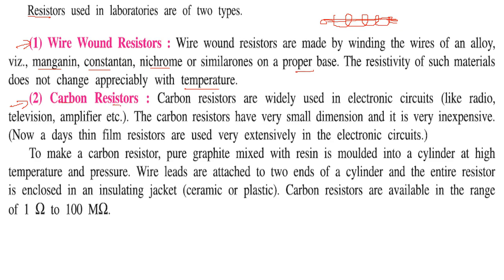Carbon resistors are another type used in laboratories, and are widely used in electronic circuits like radios, televisions, and amplifiers. Carbon resistors have very small dimensions and are very inexpensive. To make a carbon resistor, pure graphite is mixed with resin, which is moulded into a cylinder at high temperature and pressure. Wire leads are attached to the two ends of the cylinder, and the entire resistor is insulated in an insulating jacket made of ceramic or plastic.